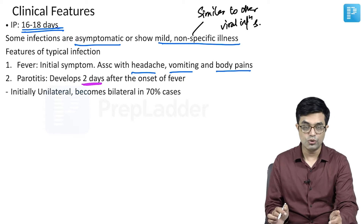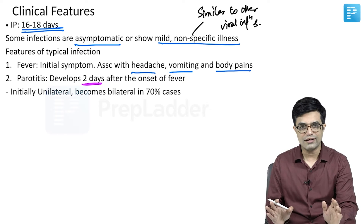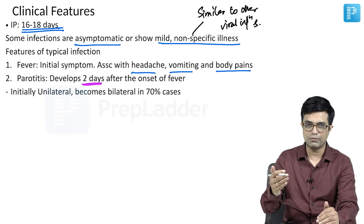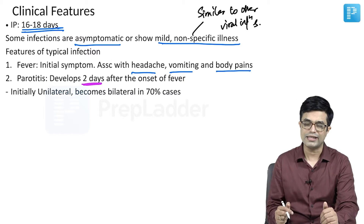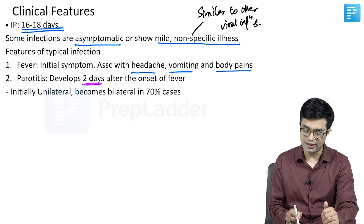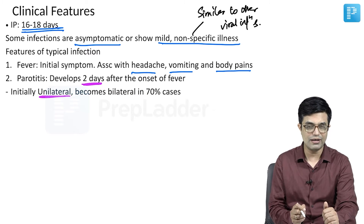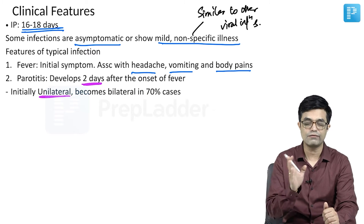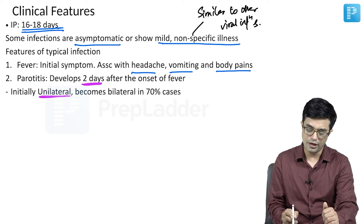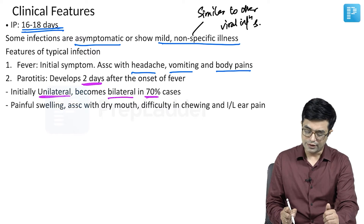Usually, unilateral presentation is initial. As infection and inflammation proceed, in 70 percent of cases there is bilateral involvement as well. So mostly it begins as unilateral — one gland is affected before the other — but eventually in about 70 percent, both glands will be affected.